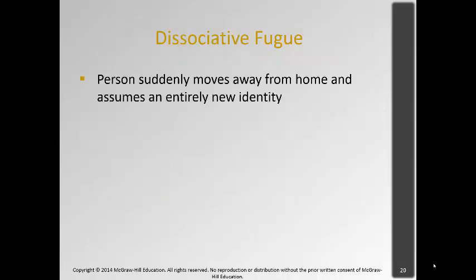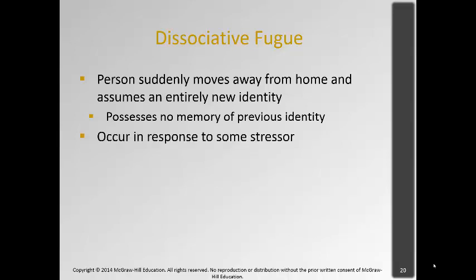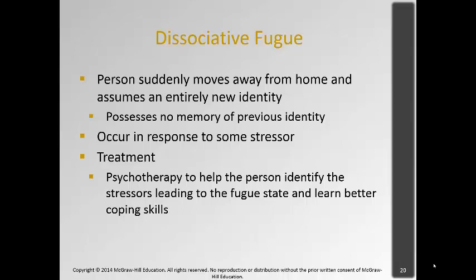Dissociative fugue is when a person suddenly moves away from their home and assumes an entirely new identity, but doesn't remember anything about their past or previous identity. It usually happens in response to some stressor — people kind of snap, move away, and assume a new identity, but don't seem particularly distressed about their inability to remember their past. In terms of treatment, you help the person identify the stressors that led to the fugue state and develop better coping skills. Once the stressors can be identified, the fugue state usually breaks down and they remember everything from their past.